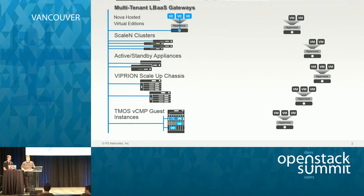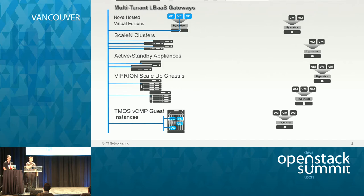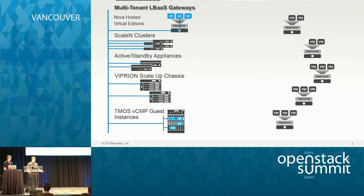What happens when you have use cases that legitimately call for a VIP at 40 gig? That's why it was very important for F5 to say that our LBAS solutions for OpenStack supported our entire product line, including our own virtualized appliances and our VCMP instances. So we spent a lot of work to make sure that when you got LBAS from F5, you didn't get a VE LBAS — you got an F5 LBAS across our product lines and offerings.